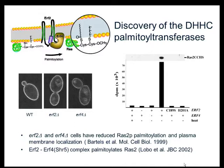Bob set up a clever genetic screen in which he created an allele of RAS that required palmitoylation for survival of the organism. He pulled out two genes, ERF2 and ERF4. These gene products form a protein complex in the endoplasmic reticulum. In their absence, RAS palmitoylation is reduced and RAS is mislocalized to intracellular membranes.